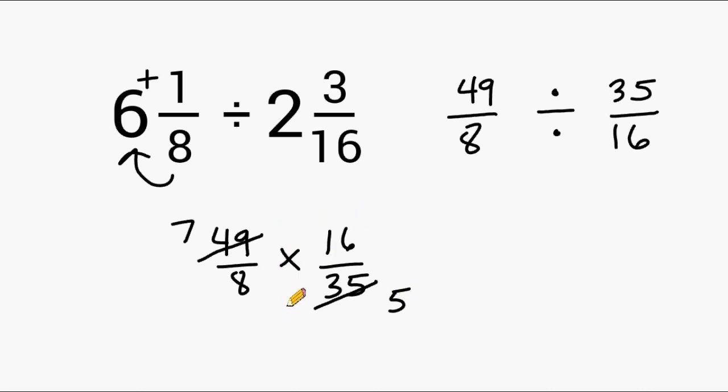8 is the greatest common factor of 16 and 8. So 8 goes into 16 twice and 8 goes into itself once. Now let's multiply our remaining numerators of 7 and 2 which gives us a product of 14 and let's multiply our denominators together. 1 and 5 will give us a product of 5.